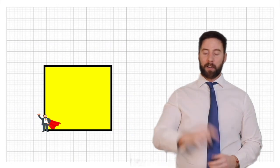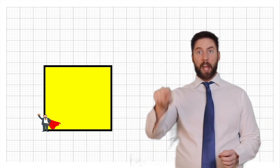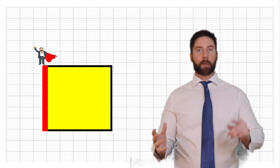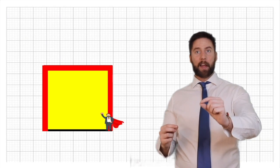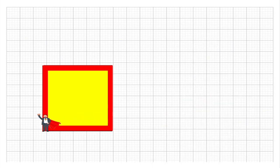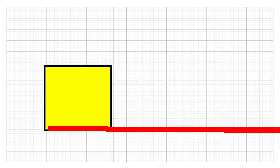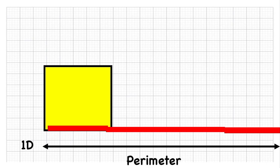One way to think about the measurement is that we are walking on the lines of our shape, and the length that we walk is our perimeter. If we start at a corner and walk all the way around the square, that gives us our perimeter. Another way of looking at it is if we take a corner and unravel it into a straight line — giving it its one-dimensional property — then the length of that line is the perimeter.